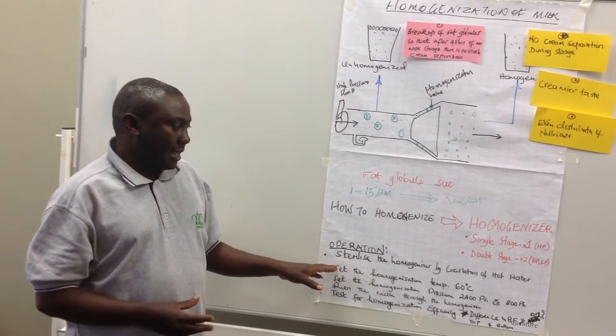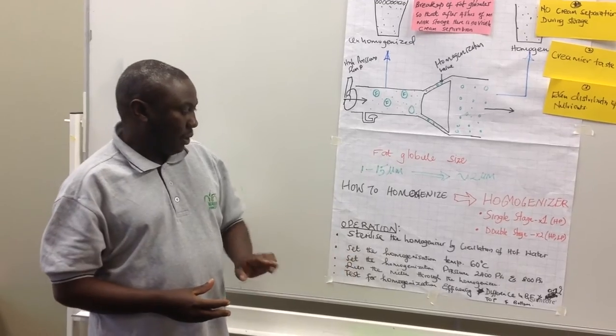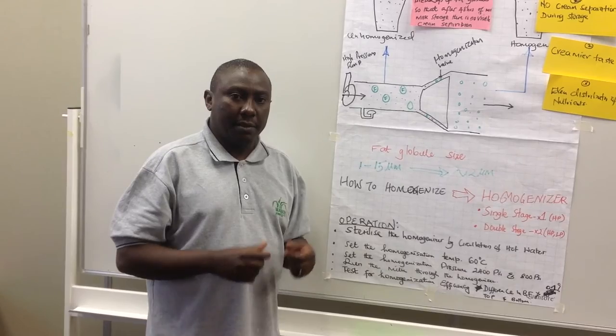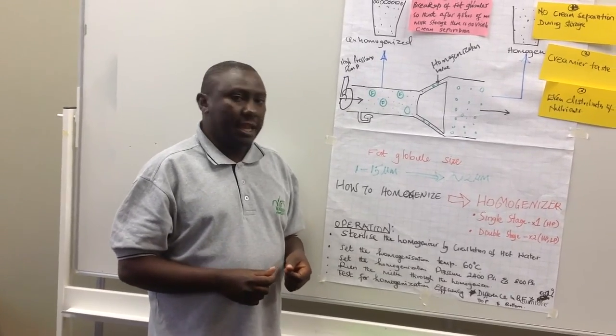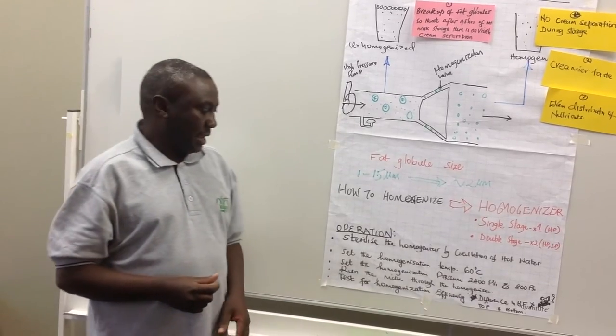So you have to homogenize a second time at a lower pressure. You set your homogenizer at 2,400 PSI (pounds per square inch), and you also set a lower pressure of 800 PSI.